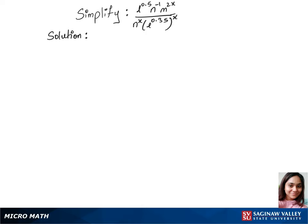To simplify this question we will use a few exponent rules. We can write our first step as L power 0.5, N power minus 1, and M power 2x over N power x and L power 0.35 times x.